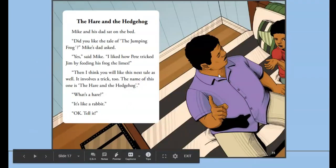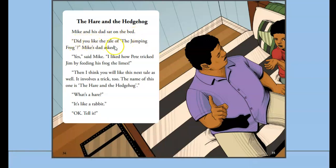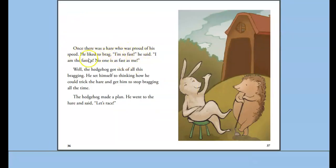Our story for today is The Hare and the Hedgehog. Mike and his dad sat on the bed. 'Did you like the tale of the jumping frog?' Mike's dad asked. 'Yes,' said Mike. 'I liked how Pete tricked Jim by feeding his frog the limes.' 'Then I think you will like this next tale as well — it involves a trick too. The name of this one is The Hare and the Hedgehog.' 'What's a hare?' 'It's like a rabbit.' 'Okay, tell it.' Once there was a hare who was proud of his speed. He liked to brag: 'I'm so fast. I am the fastest. No one is as fast as me.' The hedgehog got sick of all of this bragging and set himself to thinking how he could trick the hare. He made a plan and went to the hare and said, 'Let's race.'